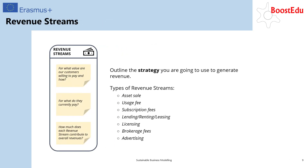The fifth building block contains the revenue streams. They answer the question: how do I make money? This constitutes more than simply the price of a product. It also answers how much are your customers willing to pay for your product, but also how are they going to pay for it? You could, for example, simply sell your product for a fixed price. You could offer a subscription fee where customers pay on a recurring basis, or a usage fee where they pay more the more they use your product. But you could also give your product away for free and then hope that some of your customers will pay for the premium version of it.